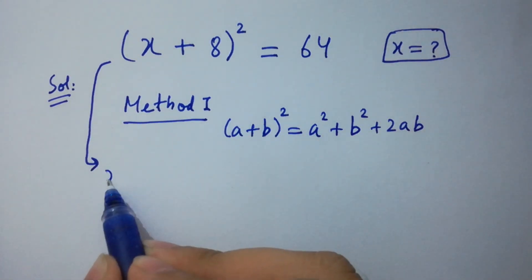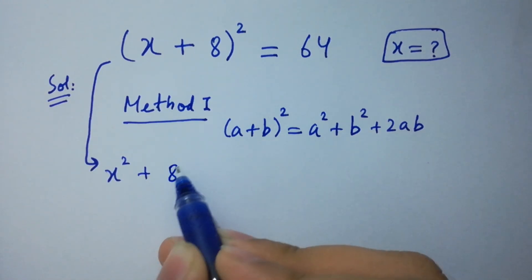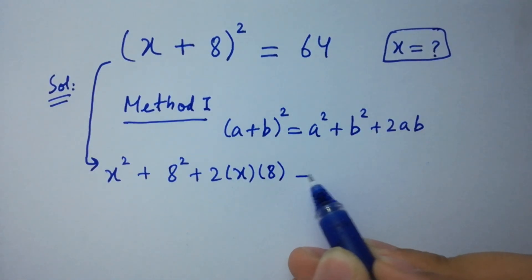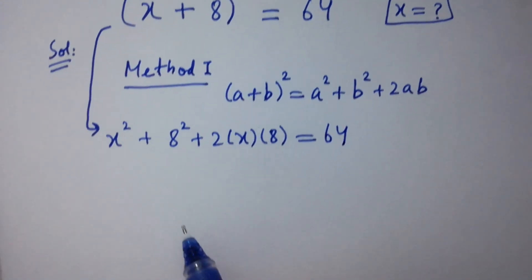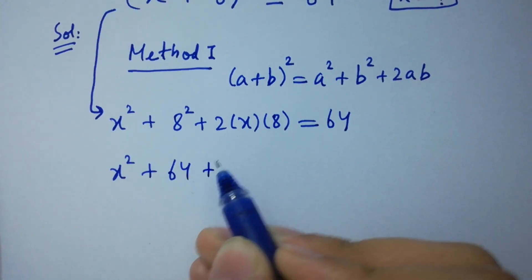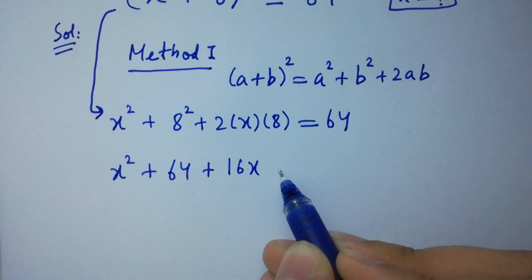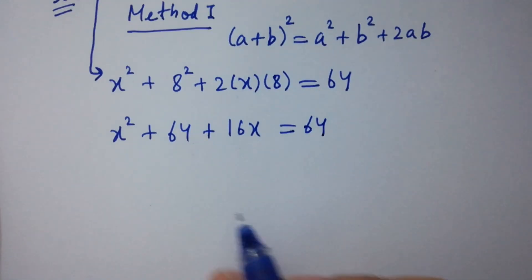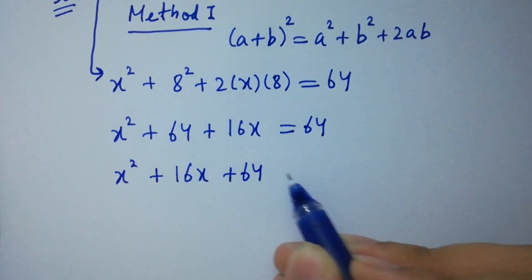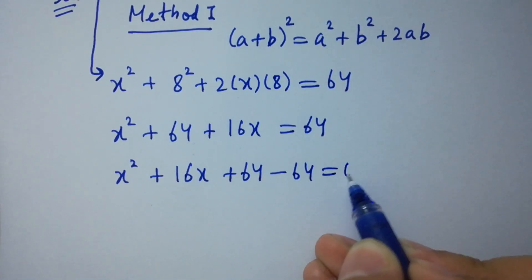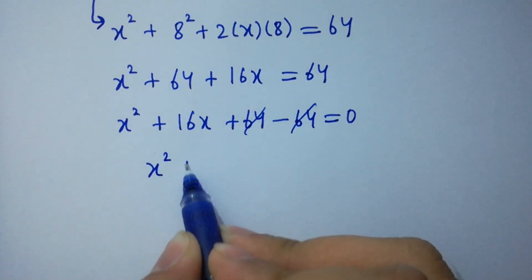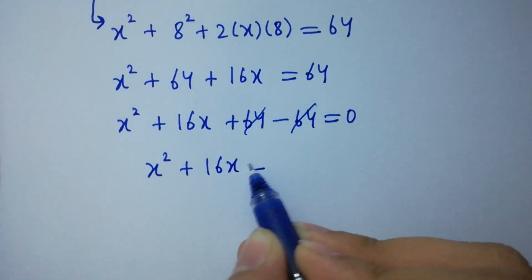We have x² + 8² + 2·x·8 = 64. That gives x² + 64 + 16x = 64. Then x² + 16x + 64 − 64 = 0. The 64s cancel, leaving x² + 16x = 0.